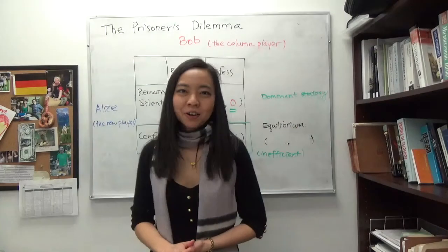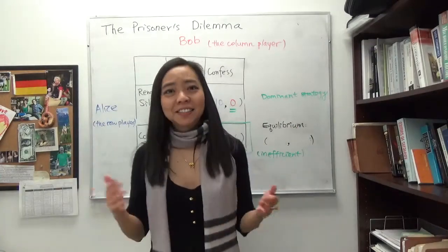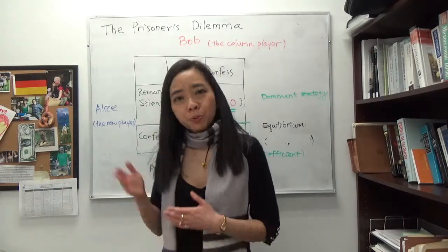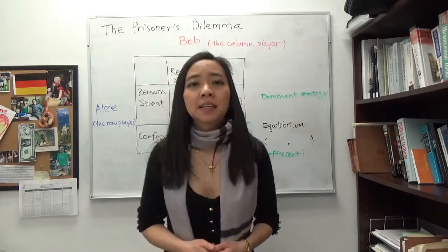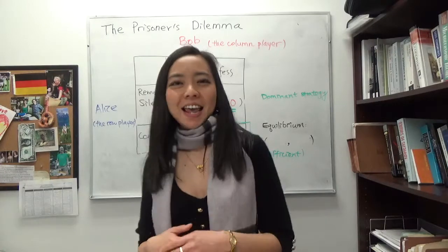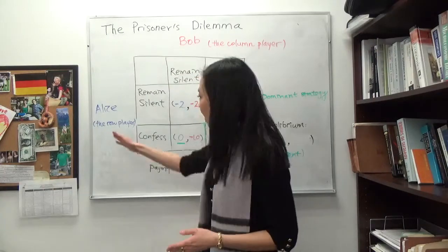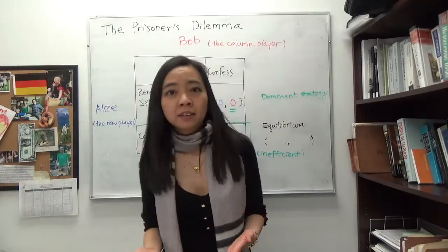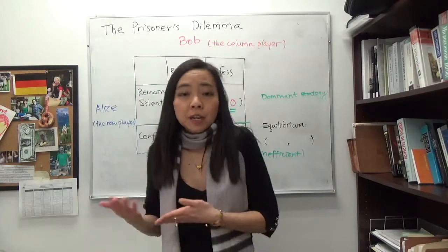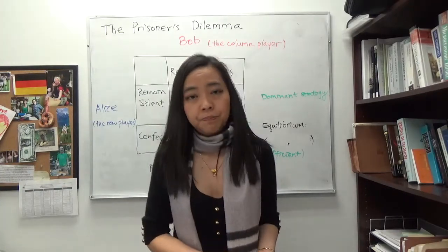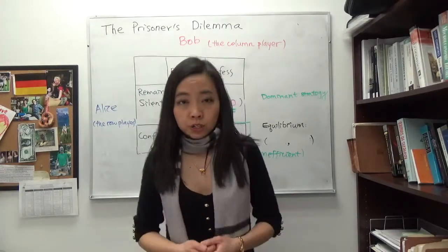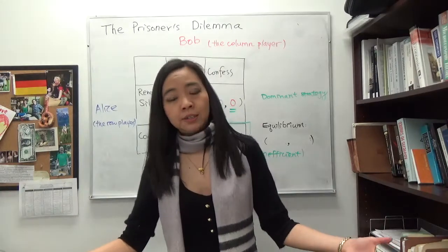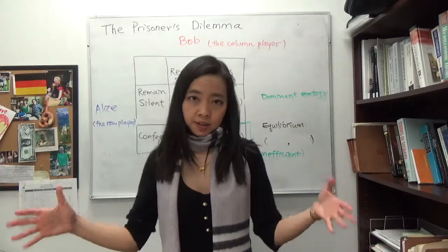Hello everyone! My name is Iris Franz and today we're going to talk about Prisoner's Dilemma. The Prisoner's Dilemma is a game played by two individuals. In our example, it's Alice and Bob. After they met, they commit a felony together. Afterwards, they were caught and put into two separate cells to be interrogated.